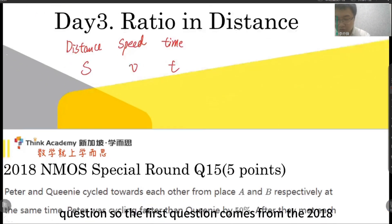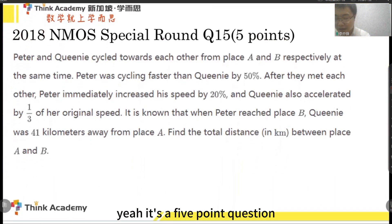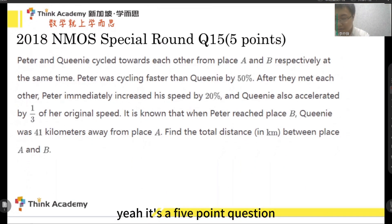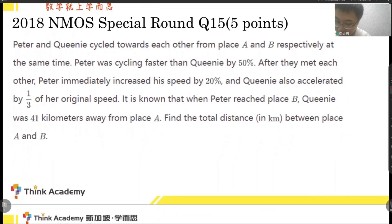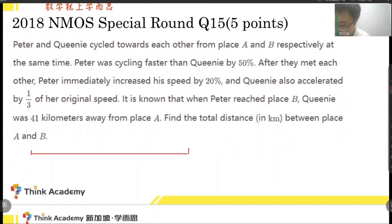Let's look at how real questions are asked. The first question comes from 2018 and is a 5-point question. There are two people, P and Q. P was cycling faster than Q by 50%, which means their speed ratio is 3 to 2.